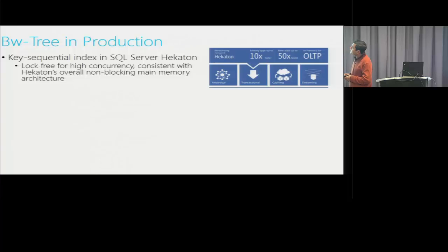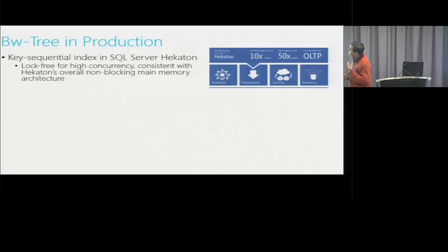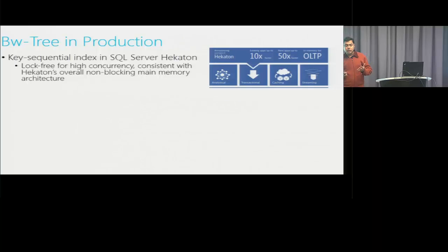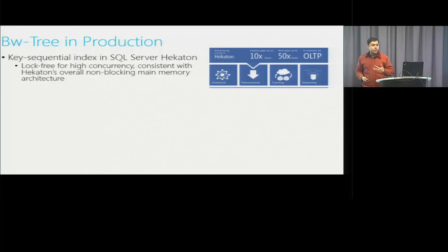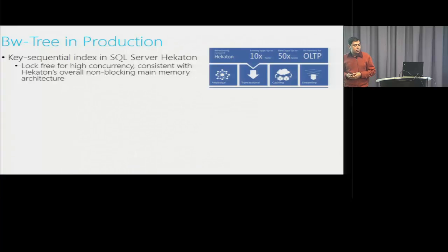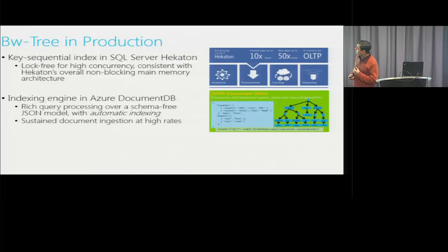The first tech transfer is the key sequential index in SQL Server Hekaton — the main memory database engine in SQL Server. Hekaton is lock-free for high concurrency; its underlying point lookup data structure uses hash tables. Hash table-based structures don't give efficient range queries, which is why BW-tree comes in: it is used for range scans in Hekaton, confirming to the overall latch-free and lock-free architecture.